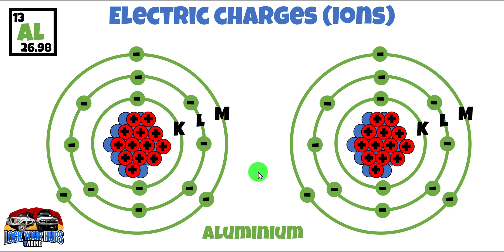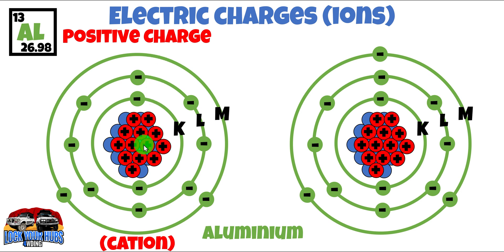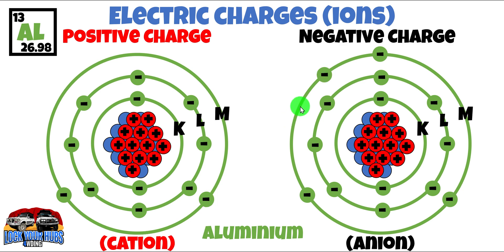So far we've only dealt with atoms that have the same number of positively charged protons in the centre as negatively charged electrons in the outer shells, so there is no net charge. Let's take aluminium — it has 13 electrons in those shells and 13 protons in the nucleus, so there is no electrical charge. But what if we take away a negative electron, one of those free electrons? Now we have an imbalance: an excess of positive protons, giving an overall positive charge, and that's known as a cation. But if that electron moves into the valence shell of another aluminium atom, we have an excess of negatively charged electrons, giving an overall negative charge, and that is known as an ion.